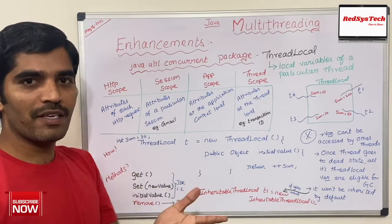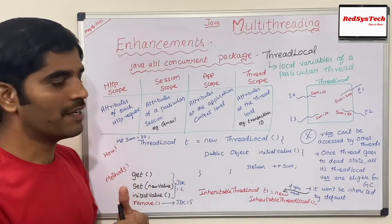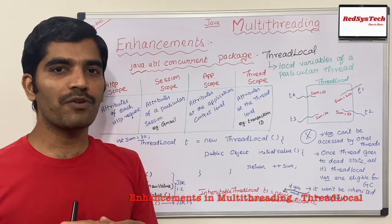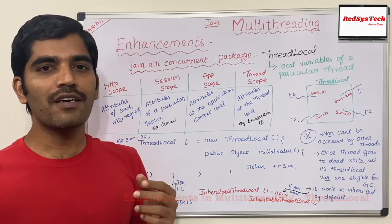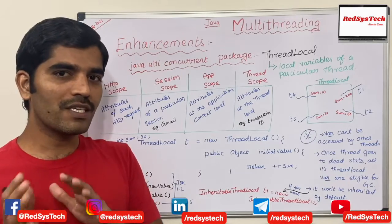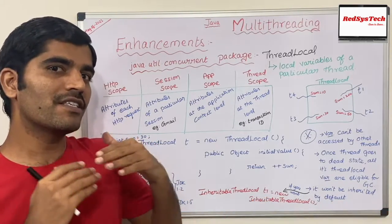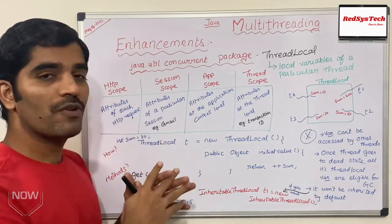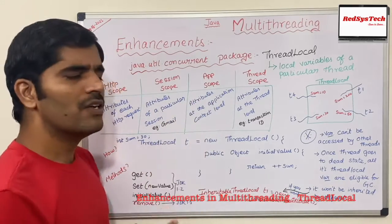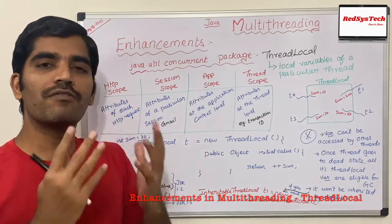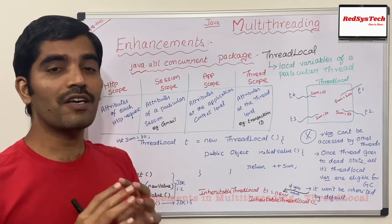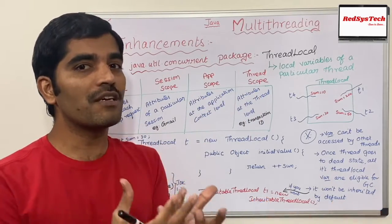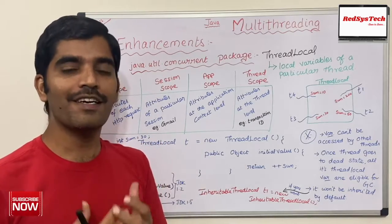The session is the scope — attributes are set only to a particular session. Once the session expires, you have to log out and re-authenticate. A simple example is Gmail or any banking transaction: once you log in, you don't send your username and password every time. Your authentication is valid till the session is valid; once the session expires, your attributes also expire. Similarly, at the application level, if you want to define something at the application context, that is application scope. And for each thread, if you want to define some context or scope, that is where ThreadLocal comes in.